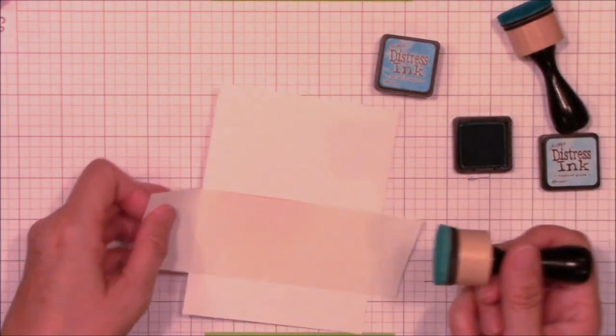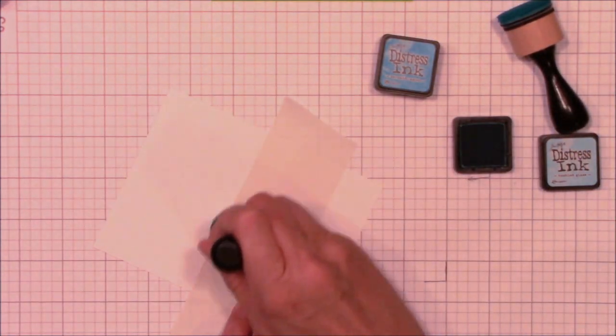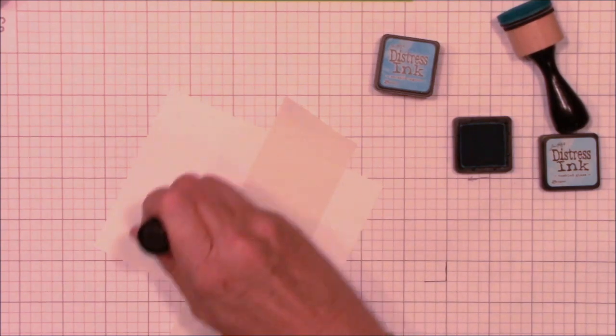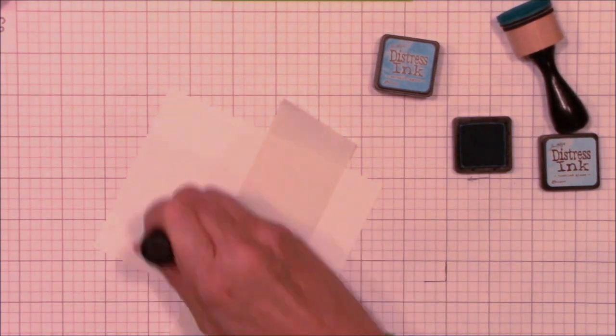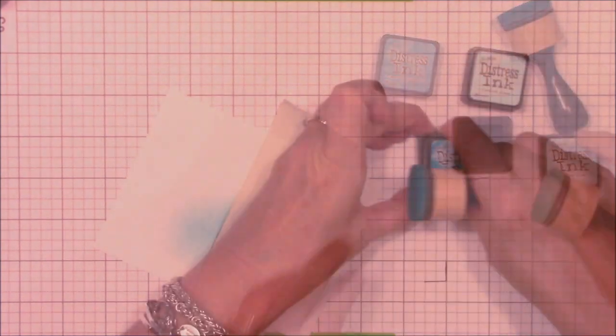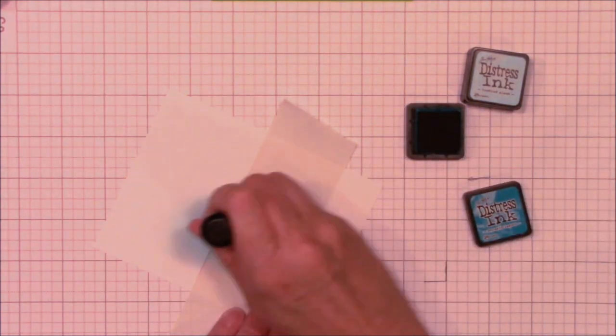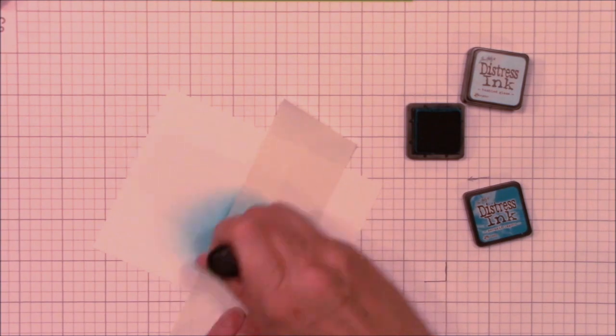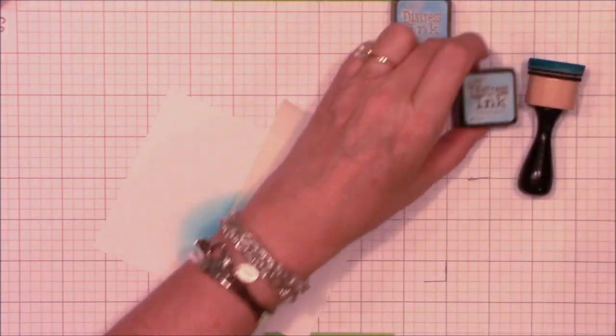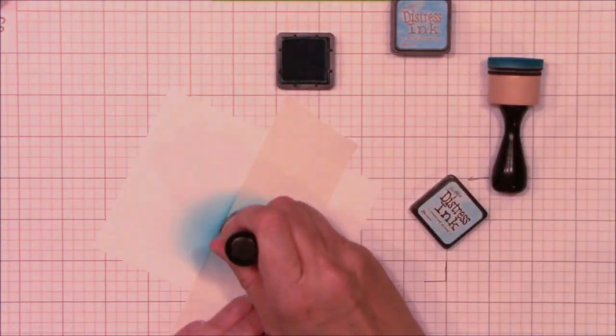I laid the second piece of post-it tape right over the top of the previously inked area and I'll start creating my water line, first using some tumble glass distress ink and then some salty ocean. It's so magical to see how these colors blend together to make a beautiful scene. A second layer of tumble glass perfects the ombre water line.